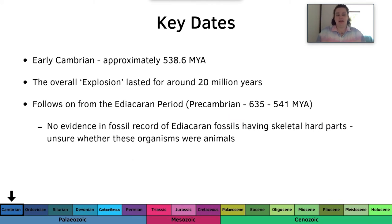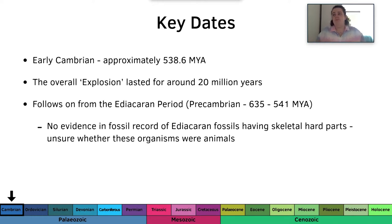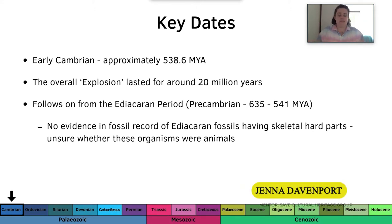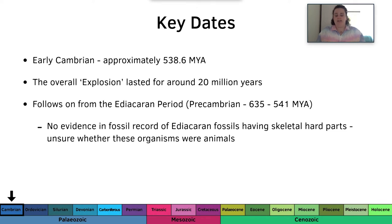So key dates. It's early Cambrian to middle Cambrian at approximately 538.6 million years ago. The date of the Cambrian-Ediacaran boundary keeps getting moved around, so this date was the most recent and more generally accepted one. The overall Cambrian explosion lasted for around 20 million years. The Cambrian follows on from the Ediacaran period, which was in the Precambrian, around 635 to 541 million years ago.